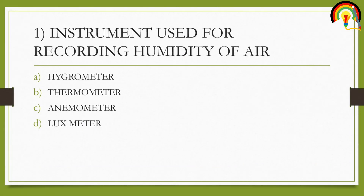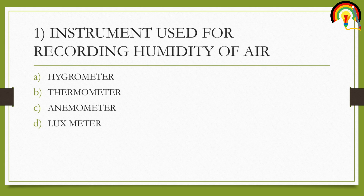Let's get started. The first question is: the instrument used for recording the humidity of air. The options are: A) hygrometer, B) thermometer, C) anemometer, and D) lux meter. Take your time answering the question.